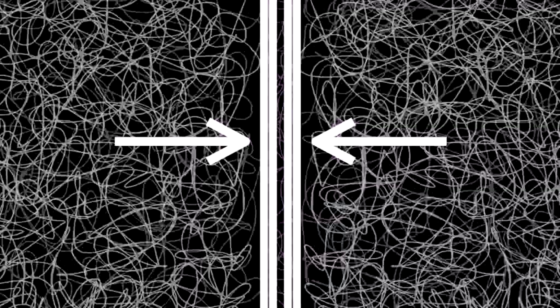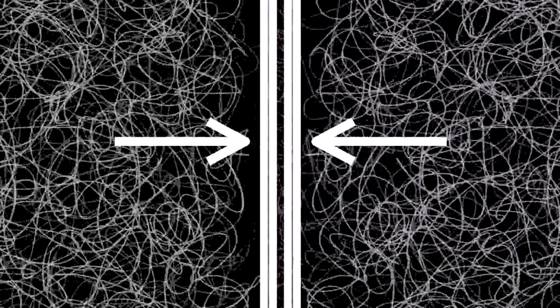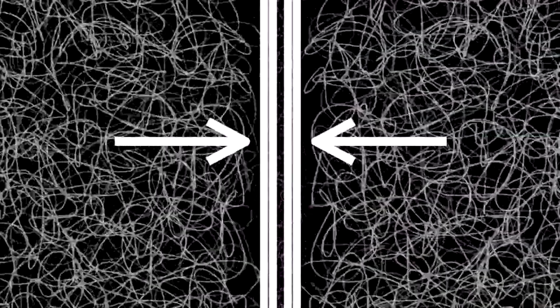This force has now been measured — you can actually detect it. You set up this experiment and the plates actually get pushed together by this effect called the Casimir effect, where you're actually seeing this effect of the virtual photons being created — this seething mass of virtual particles — but just more of them on one side of the plate than the other.